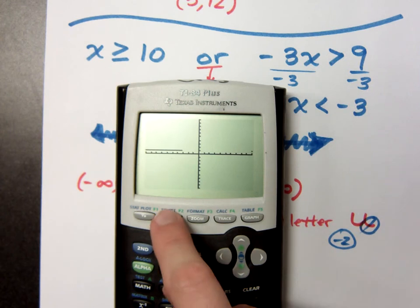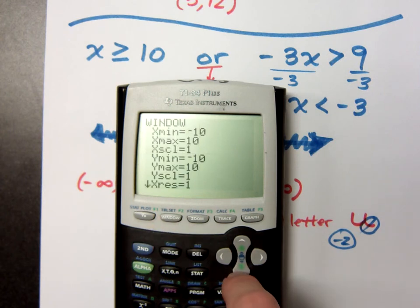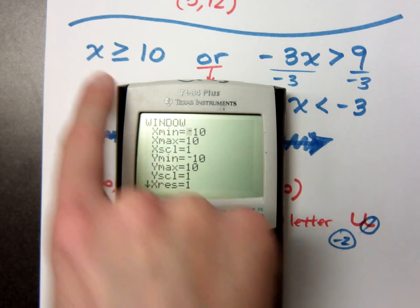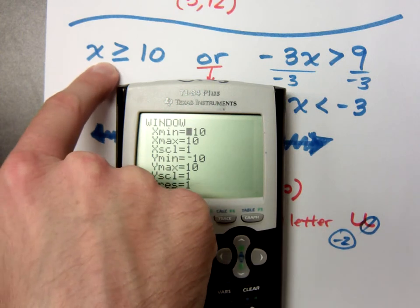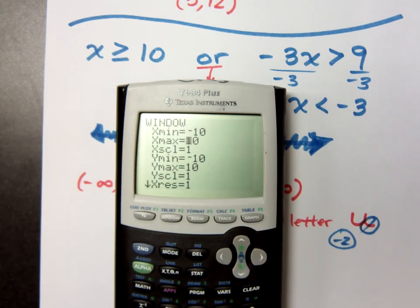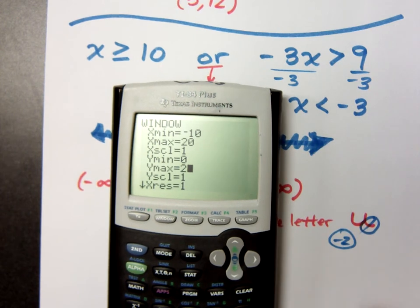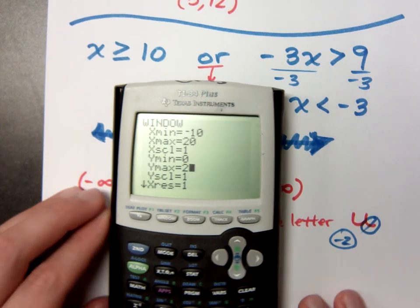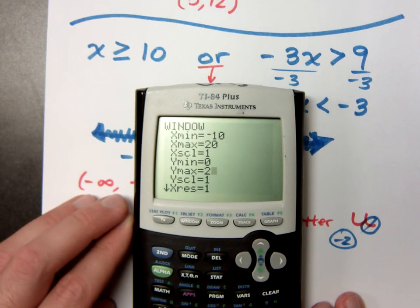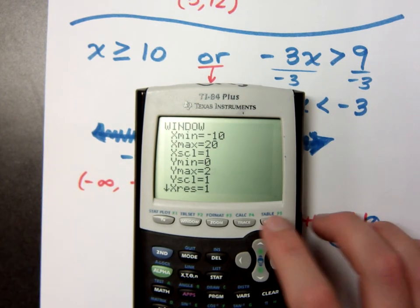Now, I'm going to change my window real quick. Let's make my, since my x is going to greater than or equal to 10, let's change that x max to be 20. Y min, well, let's make that 0. Let's make the y max, too. Since we're talking about logic, and we know that our y values will be just 0 and 1, let's do this. Now, let's go back to graph.